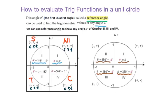For the third quadrant, any angle minus 180 degrees gives you the reference angle. For the fourth quadrant, 360 degrees minus that angle gives you the reference angle.